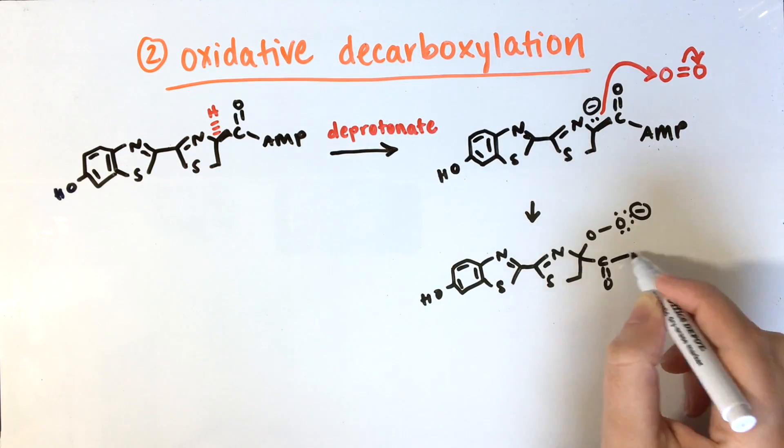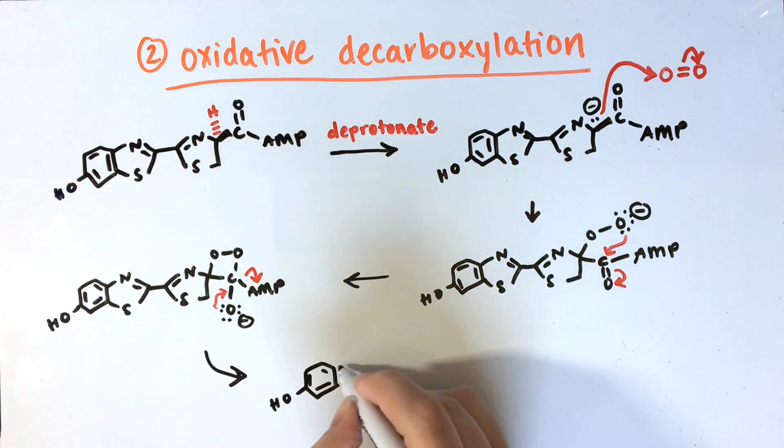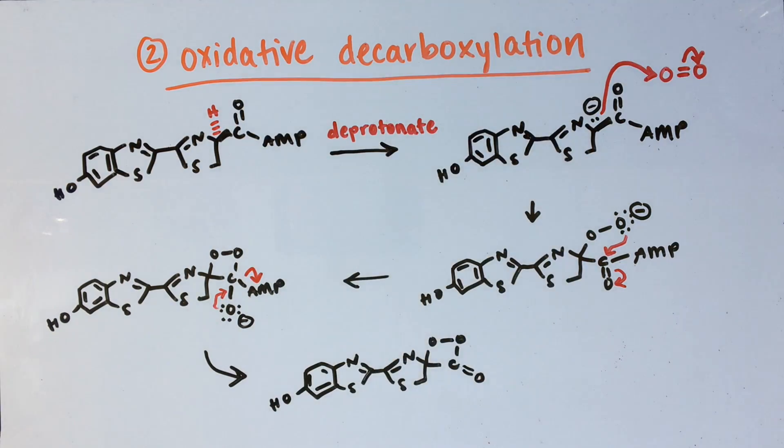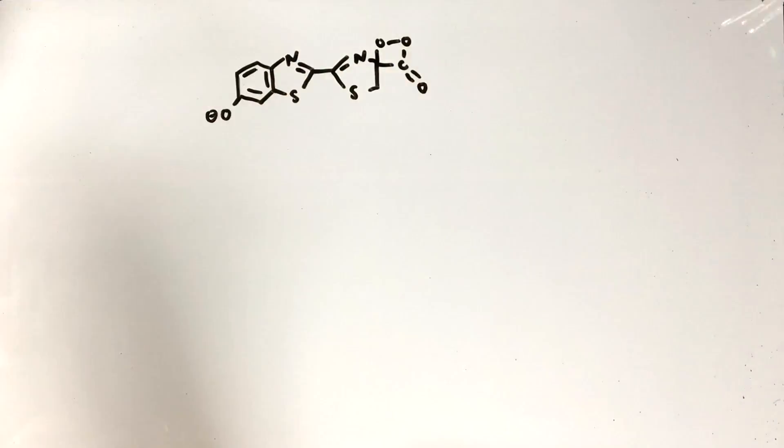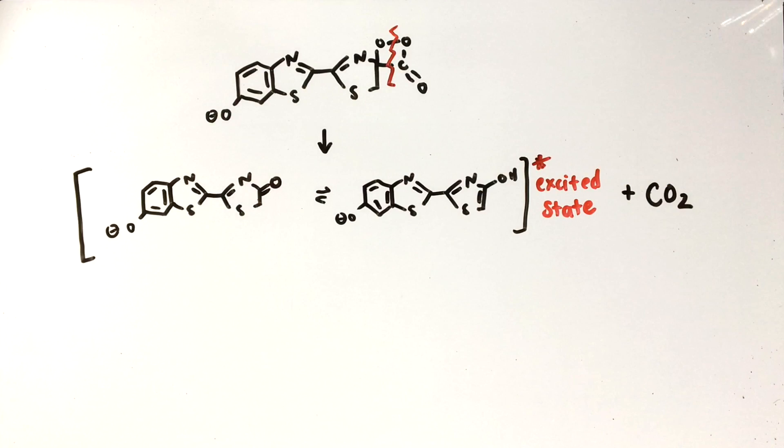A ring is formed and AMP is released. This results in a high-energy dioxetanone intermediate. The ring spontaneously breaks and we are left with electronically excited oxyluciferin and carbon dioxide.